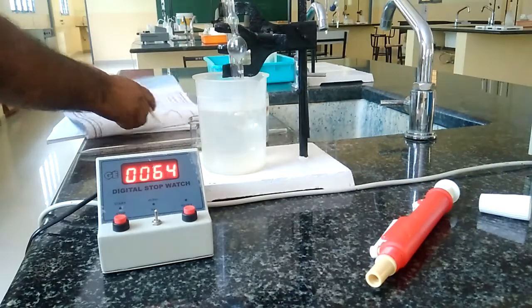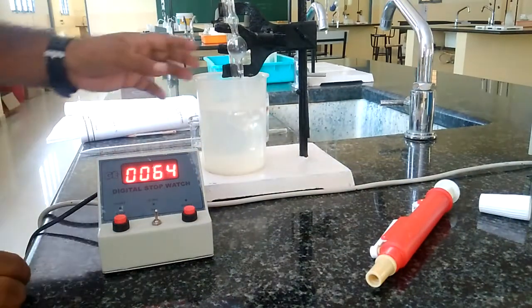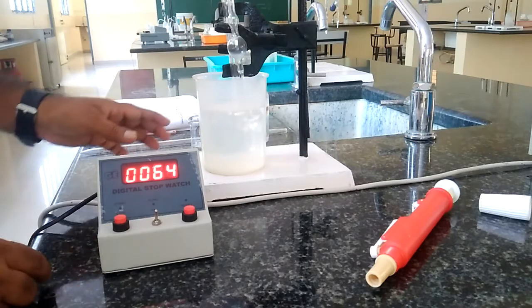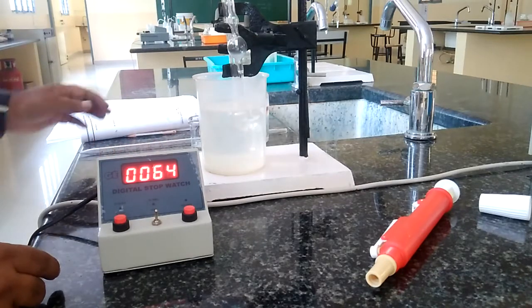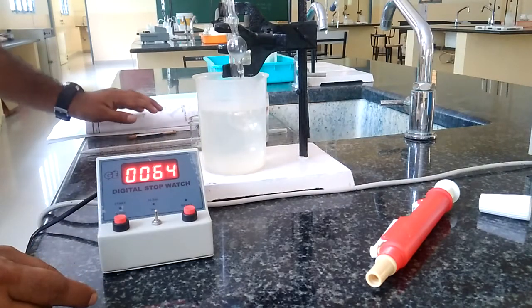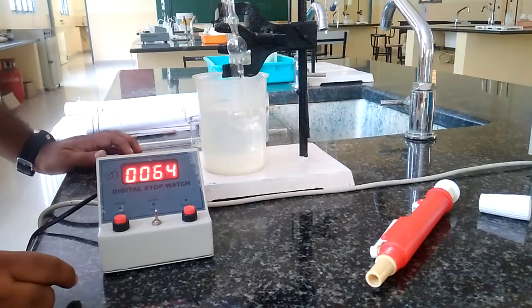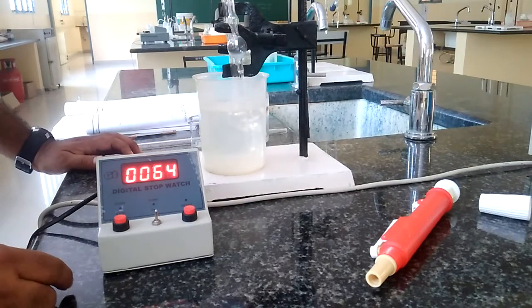We have to repeat two times again, second trial and third trial, in order to get the average. To nullify the percentage of error, we have to take the average of the three readings.